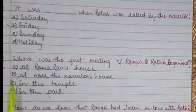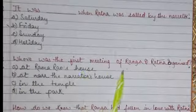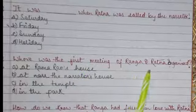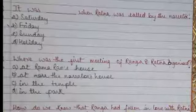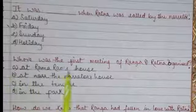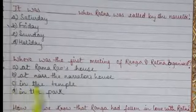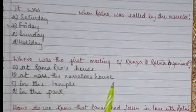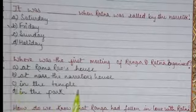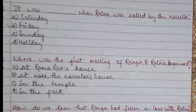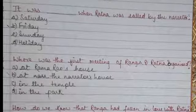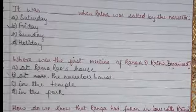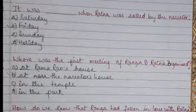Where was the first meeting of Ranga and Ratna organized? Option A: At Ramarao's house, Option B: At the narrator's house, Option C: In the temple, Option D: In the park. Option B is correct — the first meeting was organized at the narrator's house.